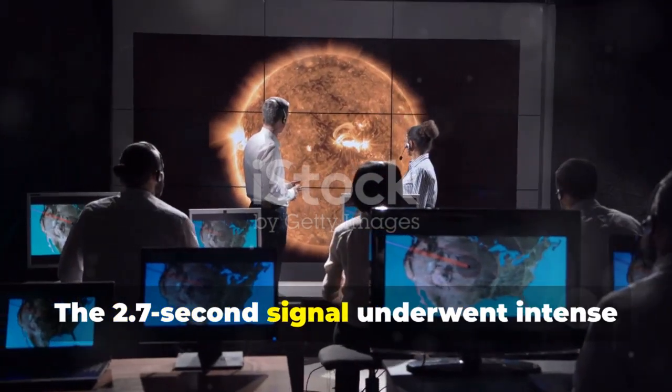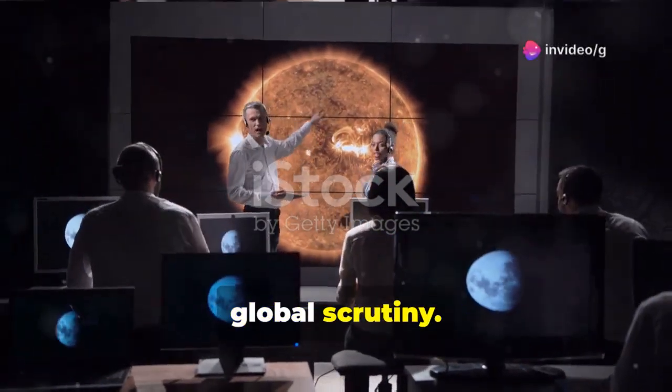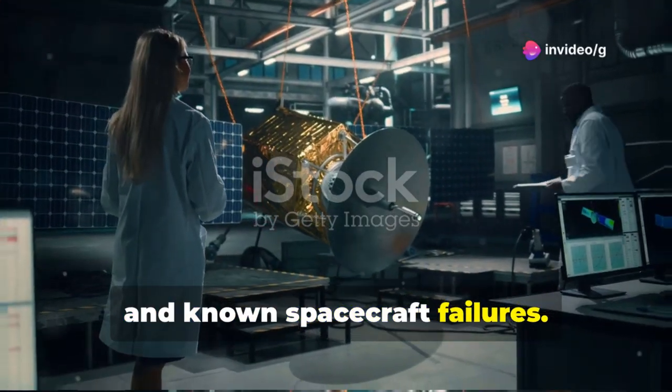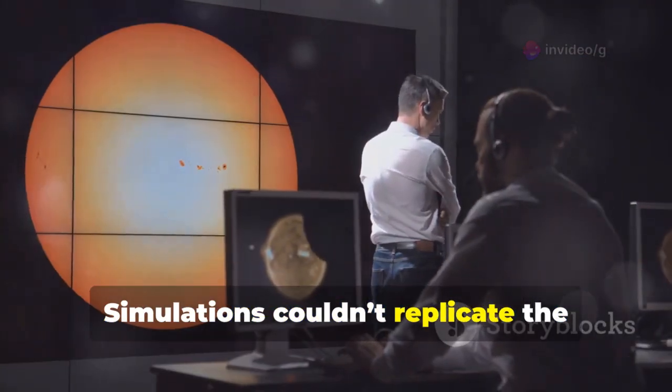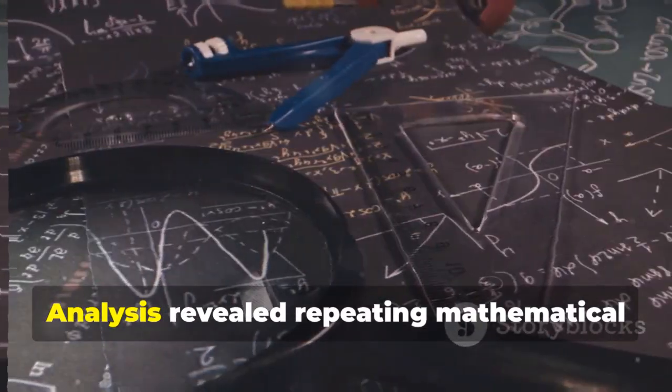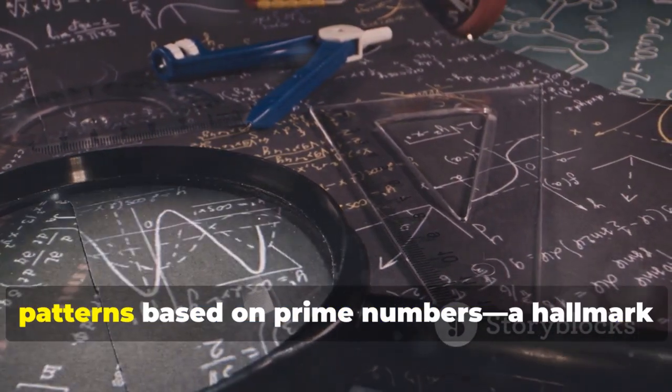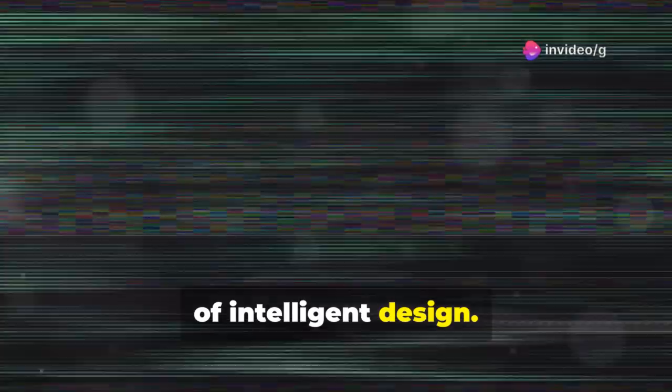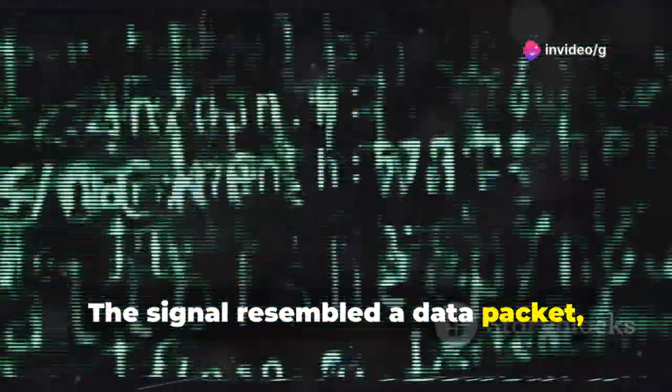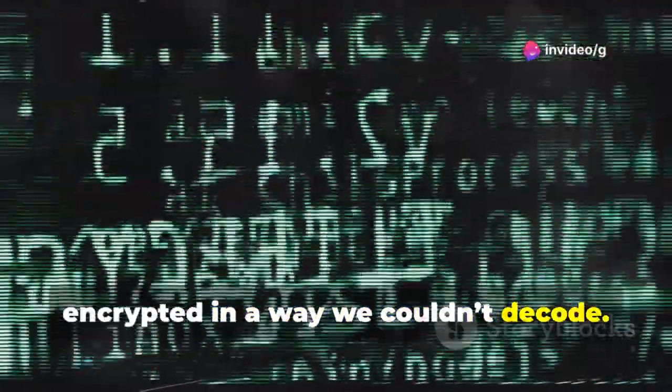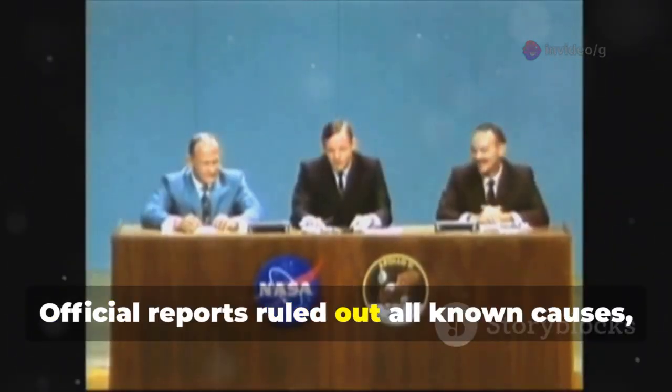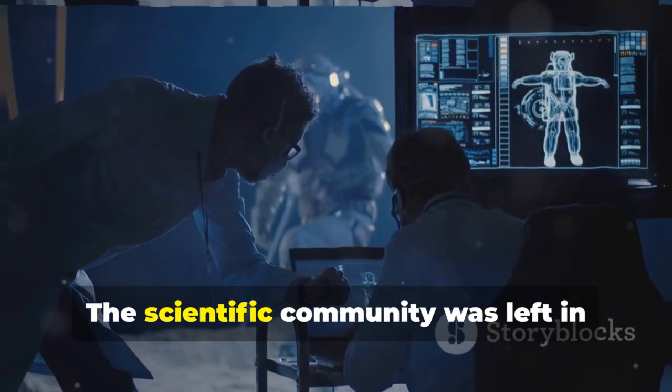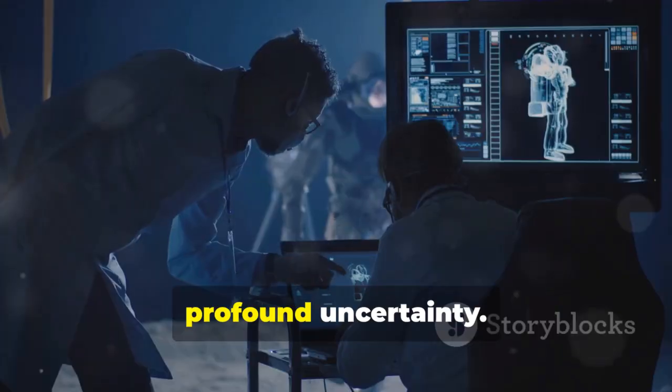The 2.7-second signal underwent intense global scrutiny. Scientists ruled out natural phenomena and known spacecraft failures. Simulations couldn't replicate the signal's unique structure. Analysis revealed repeating mathematical patterns based on prime numbers, a hallmark of intelligent design. The signal resembled a data packet, encrypted in a way we couldn't decode. Official reports ruled out all known causes, leaving the origin unexplained. The scientific community was left in profound uncertainty.